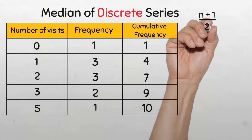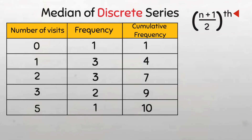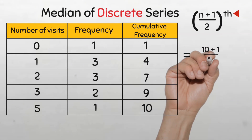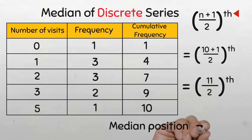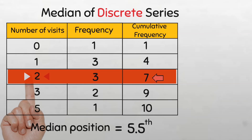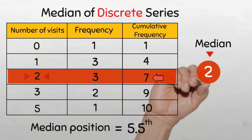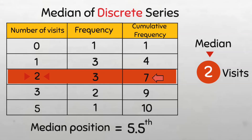The formula for locating the median position is (n+1)/2 — notice the 'th' because the formula just gives us the position. So the median position is (10+1)/2 = 11/2 = 5.5th position. Next we locate the median value using the cumulative frequency. The median is at the cumulative frequency value just above the median position. Looking at the cumulative frequency, the one just above the 5.5th position is 7. Tracing back to our original number of visits, our median number of visits is 2 visits. Easy peasy.